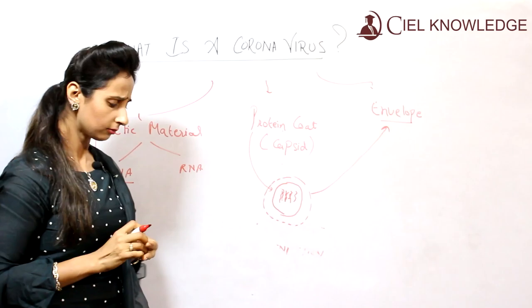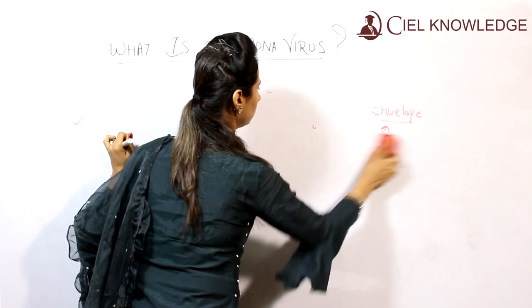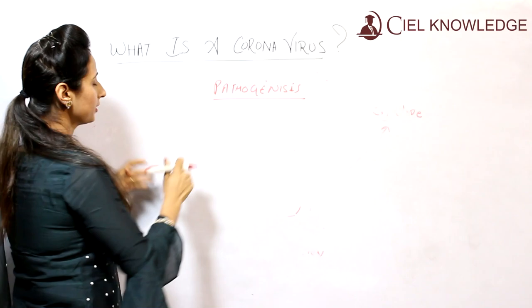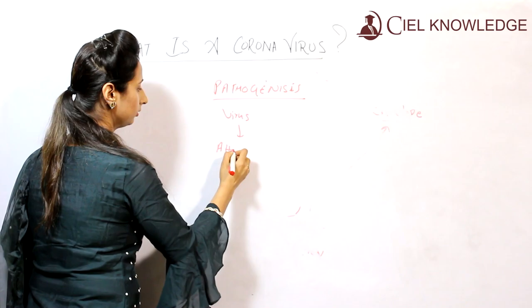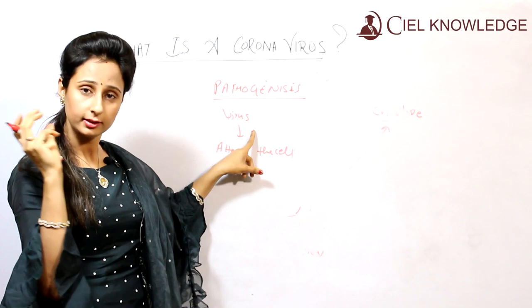Now, what is a coronavirus? Coming upon the pathogenesis — what is the way it attacks the body? The virus will attack the cell through the receptors present in the cell. Every cell has receptors, and through those receptors the virus will attack the cell.